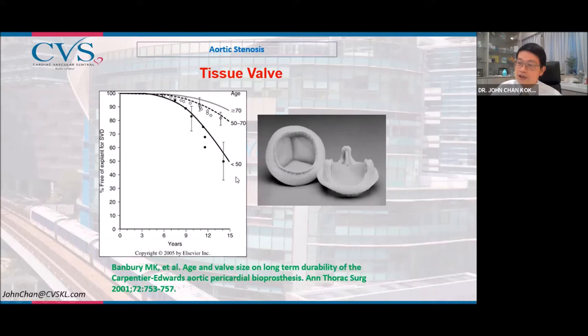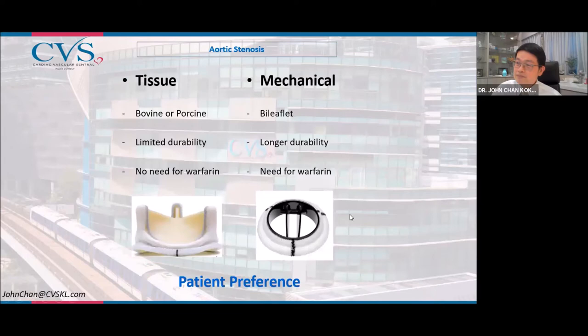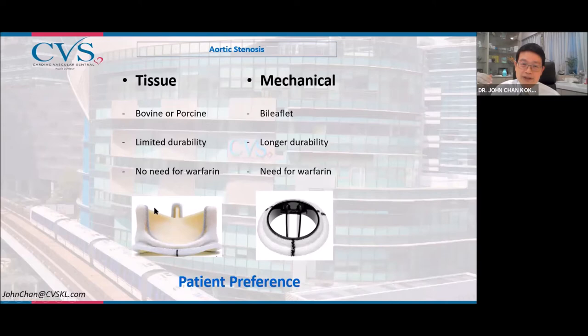This is why we recommend mechanical valves in younger patients, and tissue valves in older patients to avoid the need for anticoagulation. A young active patient who does not want to take warfarin can still have a tissue valve, but must accept that at some stage they will need another operation.